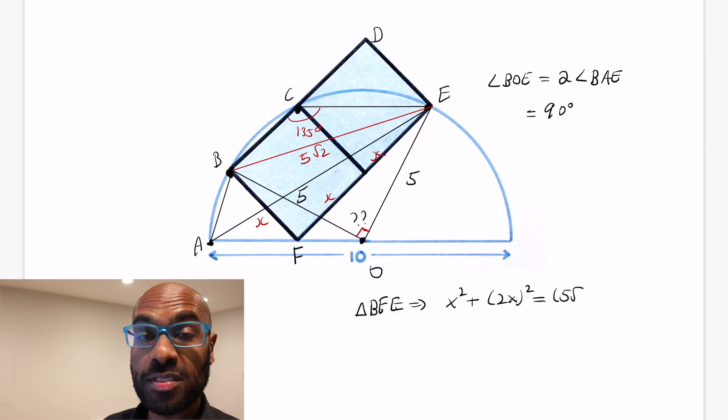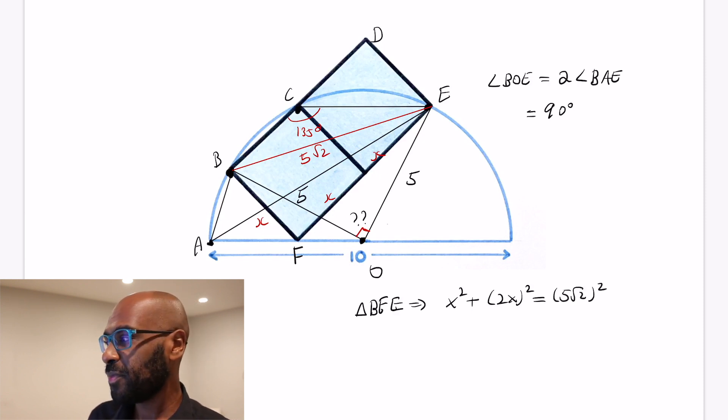We can simplify this a bit using a little bit of algebra. So on the left-hand side, we have 5X squared. The right-hand side, we have 50. So we get that X squared is 10.